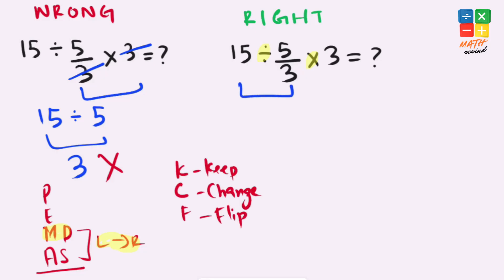To solve this, we can use KCF rule: keep, change, and flip. Keep means we keep first part of the expression as it is. Change means we change the divide sign to multiplication, and flip means we flip the fraction from 5 over 3 to 3 over 5.